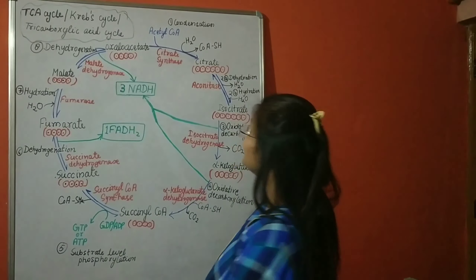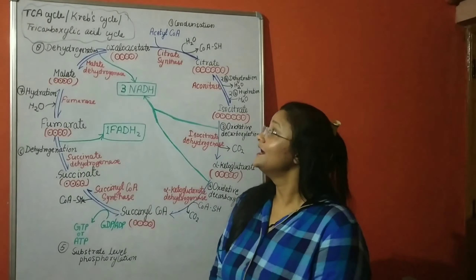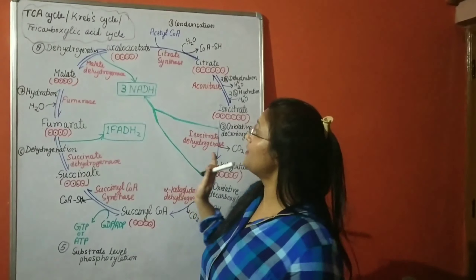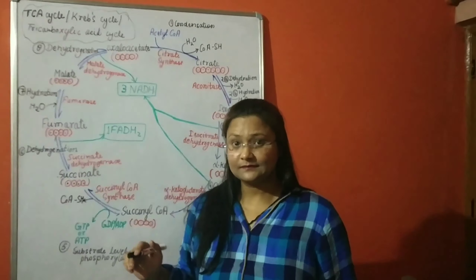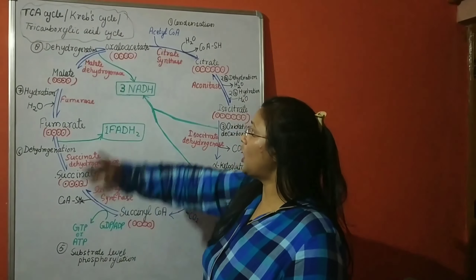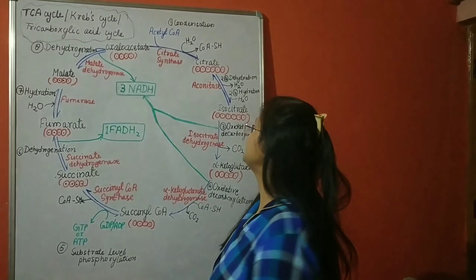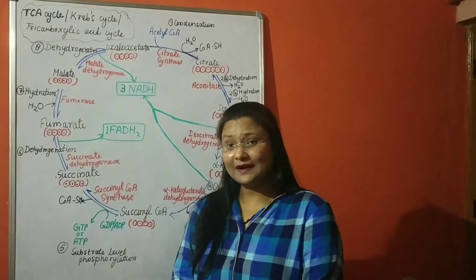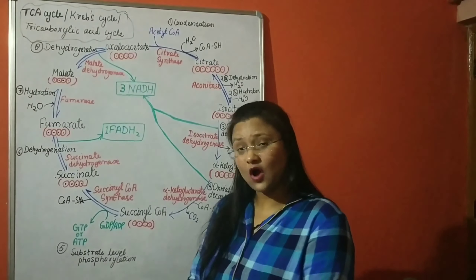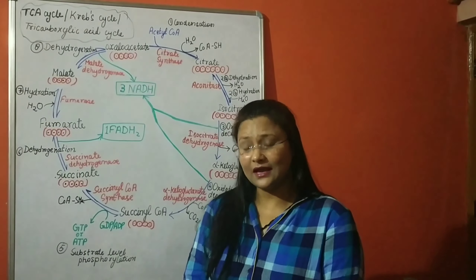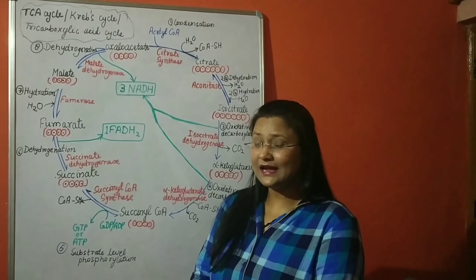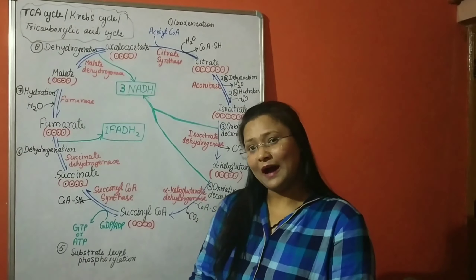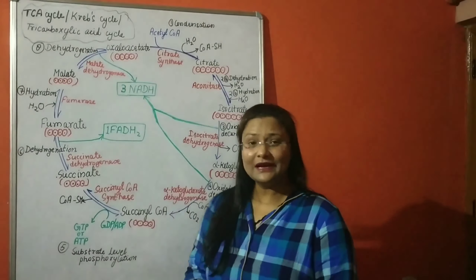Today let us discuss the TCA cycle, Krebs cycle, or tricarboxylic acid cycle — these terms are all synonyms. We learned that in the pyruvate dehydrogenase complex (PDH complex), we get acetyl-CoA from pyruvate. Today we will discuss what happens to the acetyl-CoA produced in the PDH complex.